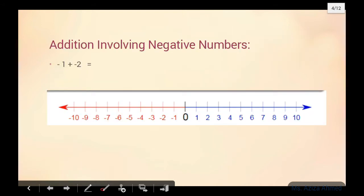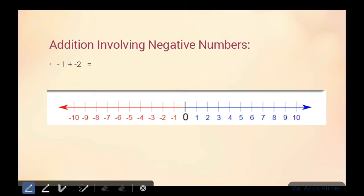Ab hum start karte hain addition which involves negative numbers. Agar negative numbers honge, toh hum kis tarah unko add up karenge? For example, mere paas negative one hai. Number line ke through hum isko solve karne ki koshish karte hain. Negative one mein humne kitne add karne hain? Negative two. Toh negative one mein humne add karna hai negative two. Wahan tak two ko count kar liya. Toh kitne ban gaye? Negative three. Negative ke numbers thay, toh answer bhi negative mein aaya.